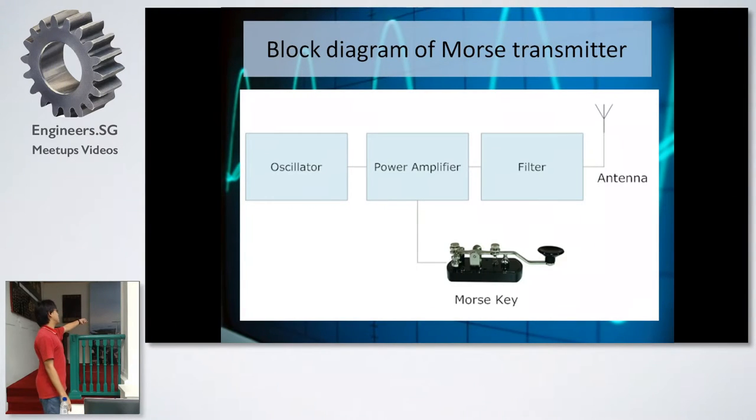The block diagram, as I said: the oscillator, power amplifier, filter, and your Morse key. That's it.